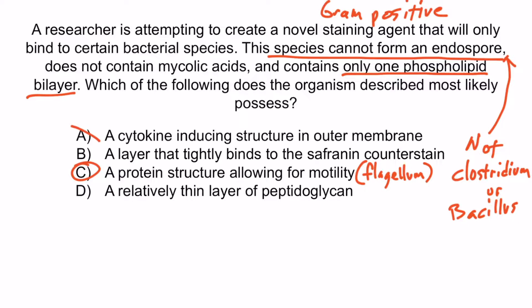Choice A is wrong because it refers to lipopolysaccharides — you might have been thinking about lipoteichoic acid in the cytoplasmic membrane of gram-positive organisms, which does induce cytokines, but only gram-negative bacteria contain that outer membrane, so the cytokine-inducing structure here describes LPS. Choice B is wrong because it describes the outer membrane of gram-negative bacteria, which stains red with the safranin counterstain. Choice D is wrong because a thin cell wall is common to gram-negative bacteria and Mycobacteria, and we know this organism lacks mycolic acids. The correct answer is choice C.